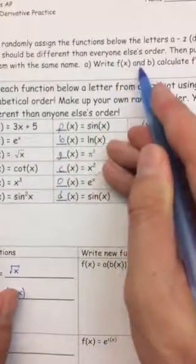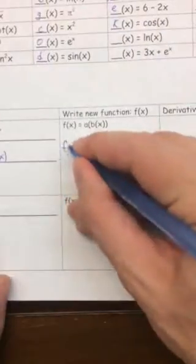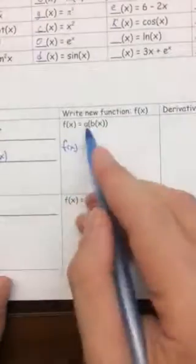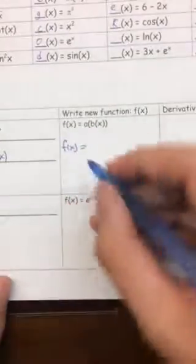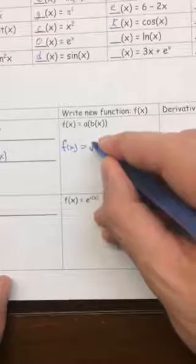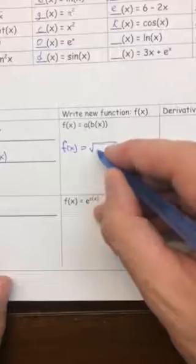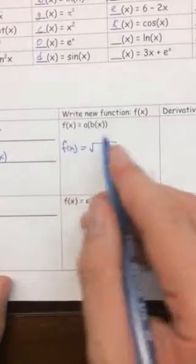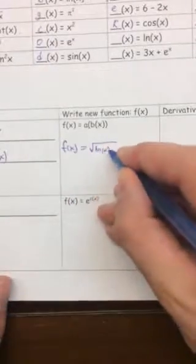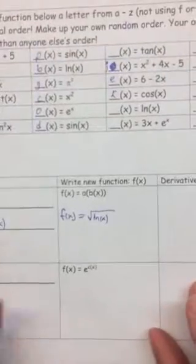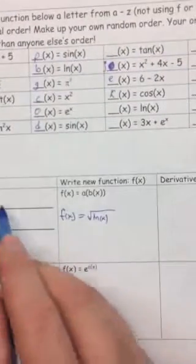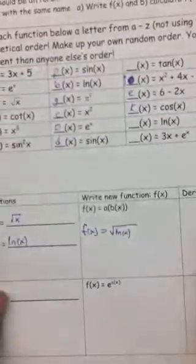It says in the directions write F of X. So F of X will equal A of B of X. So that means we're going to plug in B of X into A of X. So it's square root, because that's what A says. But instead of square root of X, it's square root of B of X, which is natural log of X. Yours should not match this. You shouldn't have these same functions as me. You should not be copying this.